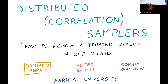The third speaker is Damiano Abram. I'm going to talk about distributed correlation samplers, which is joint work with Peter Scholl and Sofia Yakubov. My name is Damiano, and now I'm going to present our paper, which is titled Distributed Correlation Samplers: How to Remove a Trusted Dealer in One Round.